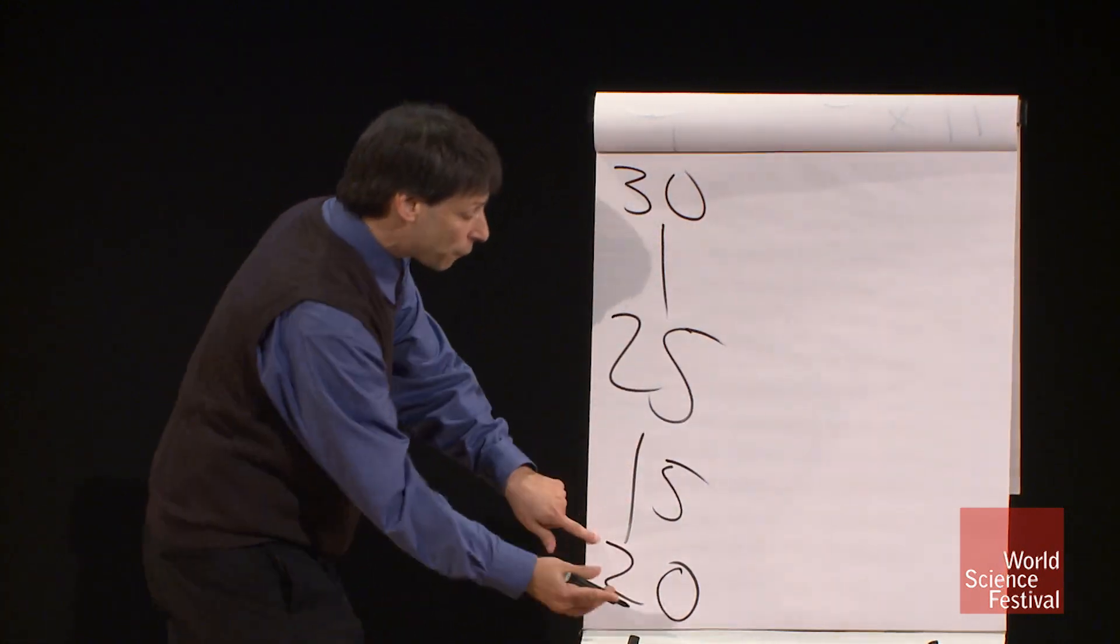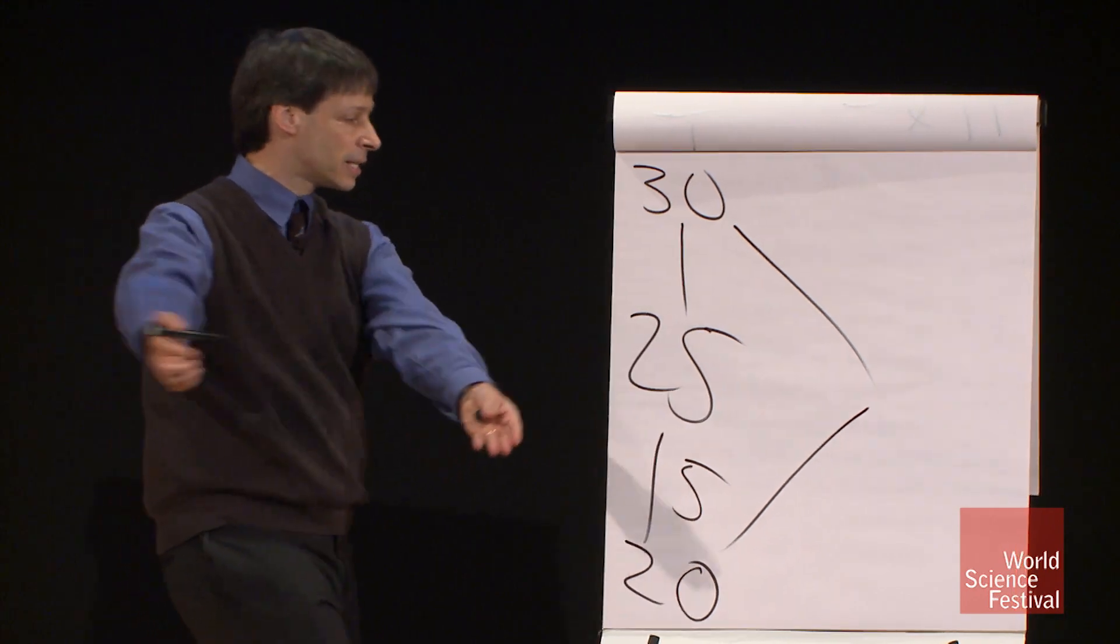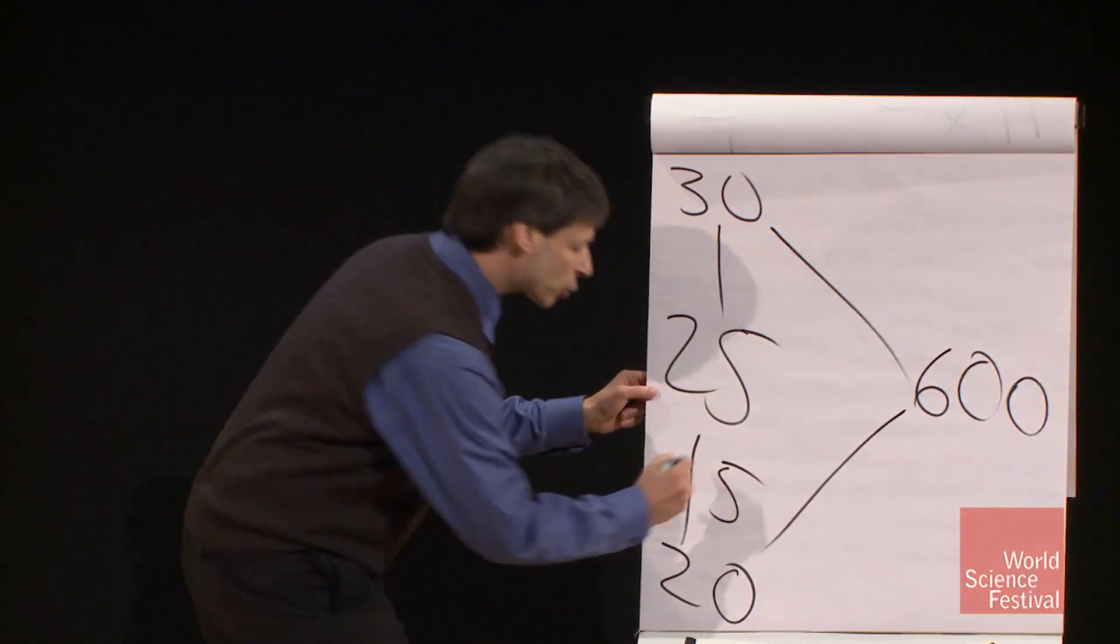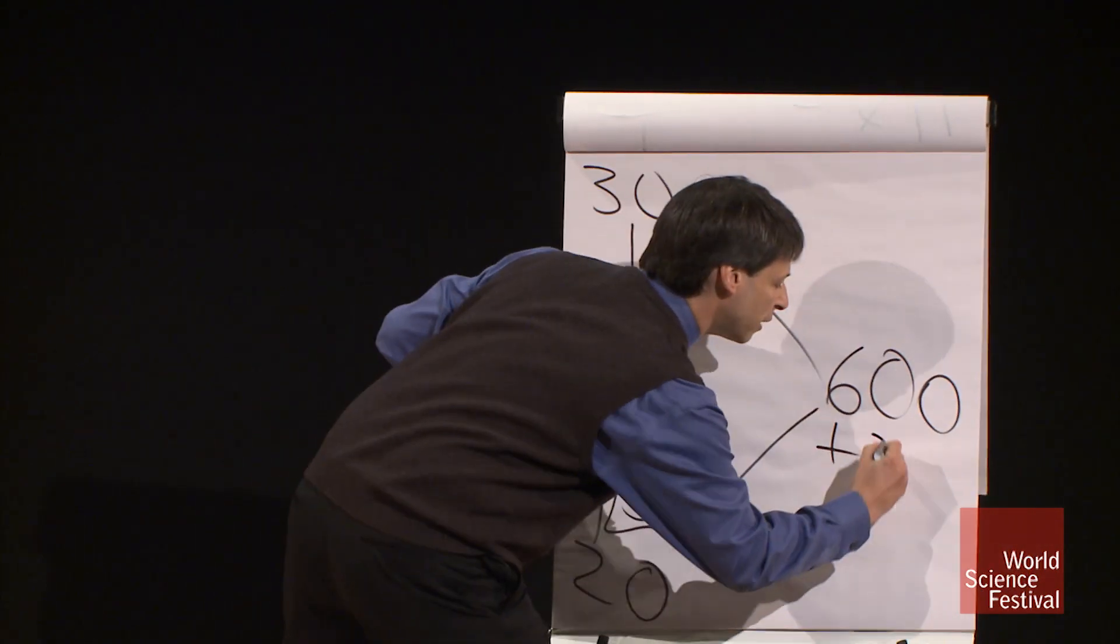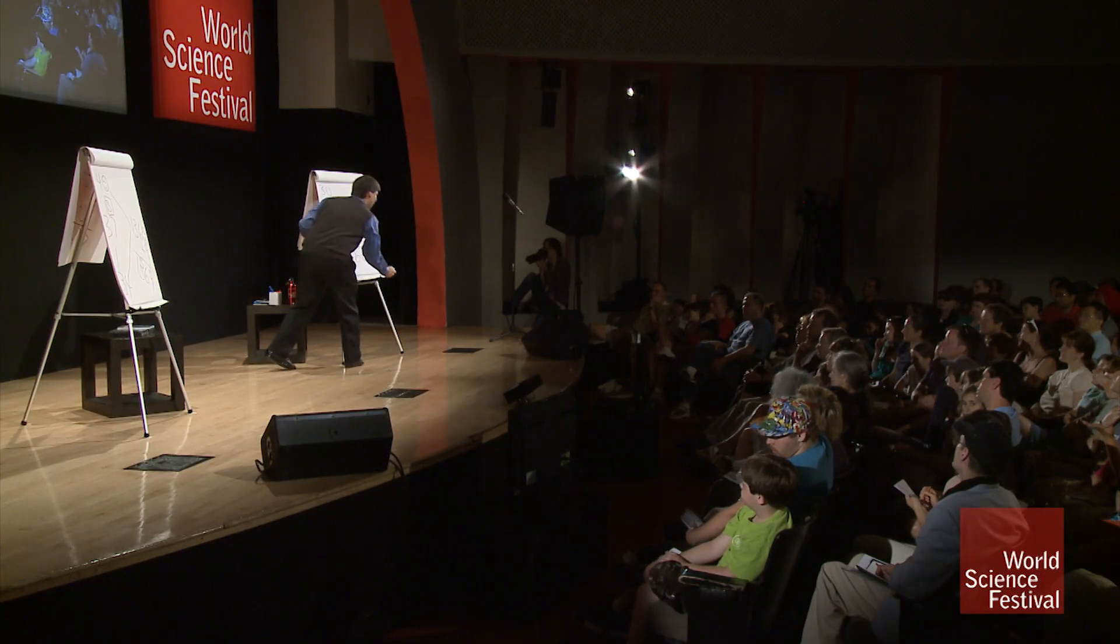Right? Because if I go down 5, I have to go up 5. 20 times 30 is? 600. And what do we add to that? The square of 5, which is 25 to get, say it? 625. You got it.